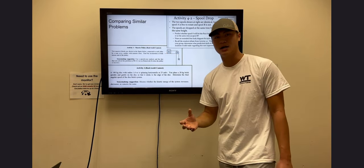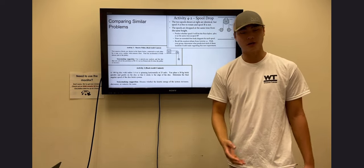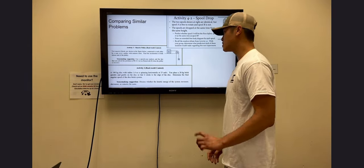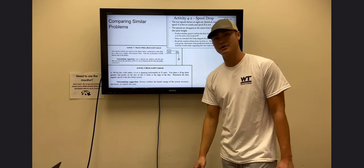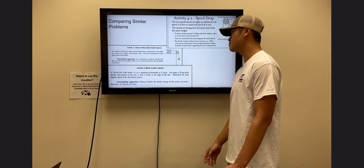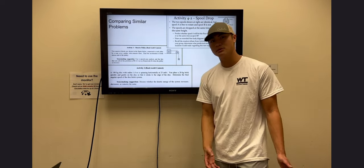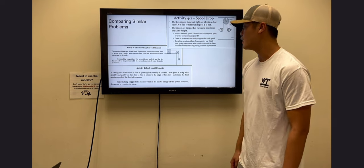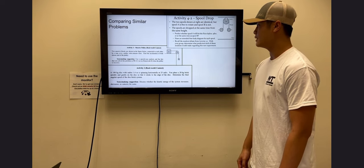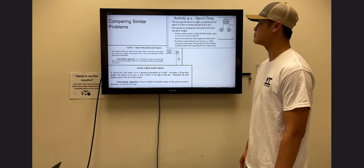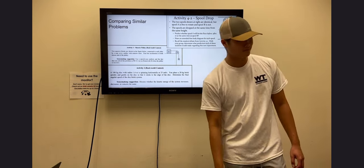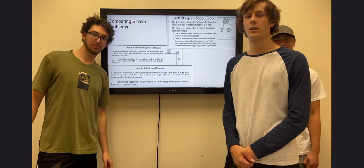That helped us solve and sense-make our problem for this project. Activity two was a disc spinning horizontally with a 20-kilogram brick on the edge, and we calculated the angular speed of that, which was very similar to the problem we have for our project. We took principles from all of these activities and applied them to this project. Thank you for listening — this is all we have for today.